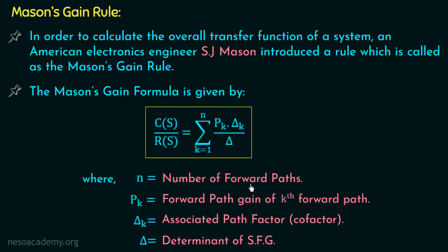Here n is the number of forward paths, which we discussed in the previous lecture, and it is represented by the letter n in Mason's gain formula. P_k is the forward path gain of the kth forward path. If a signal flow graph has two forward paths, then the forward path gain of the first forward path will be P1, and the forward path gain of the second forward path will be P2, and so on.